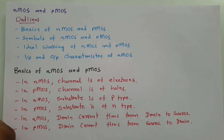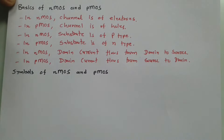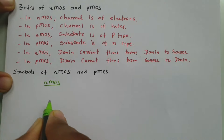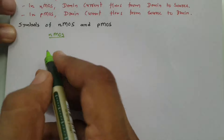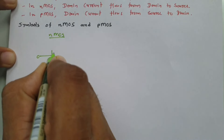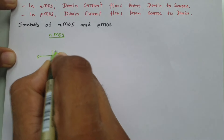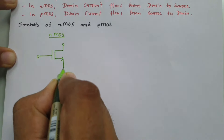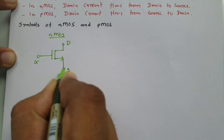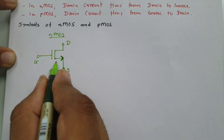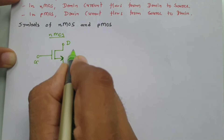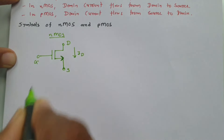Now I'll explain the different symbols associated with NMOS and PMOS. In the NMOS symbol, there are three terminals: gate, drain, and source. The arrow at the source terminal points outward — this indicates NMOS. The drain current direction flows from drain to source, so ID flows in that direction.